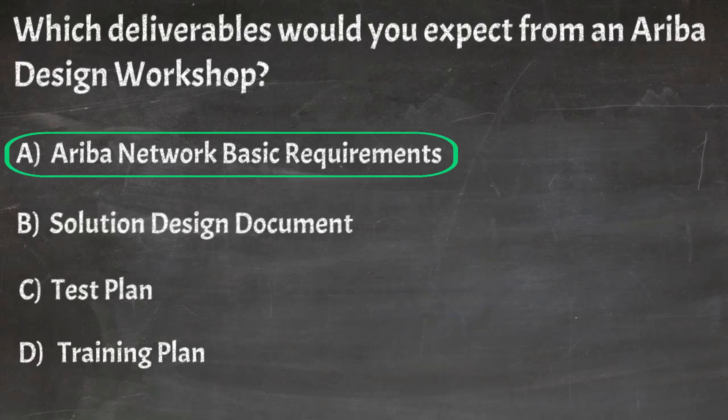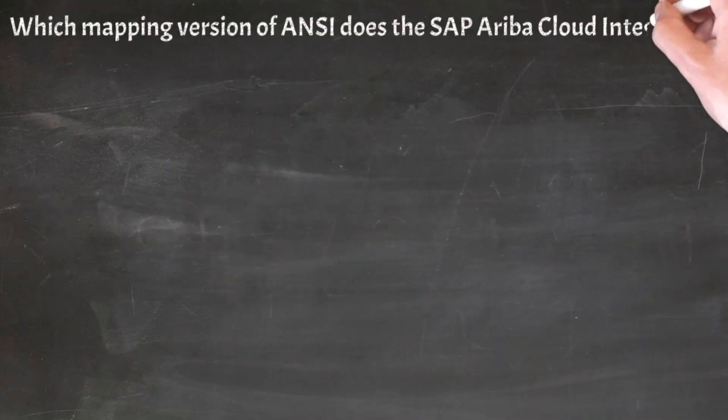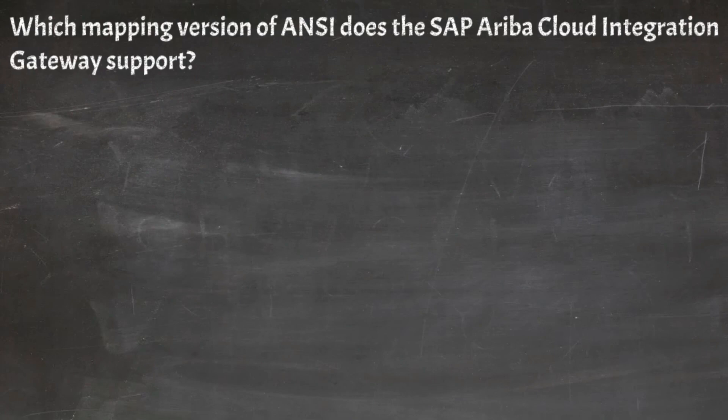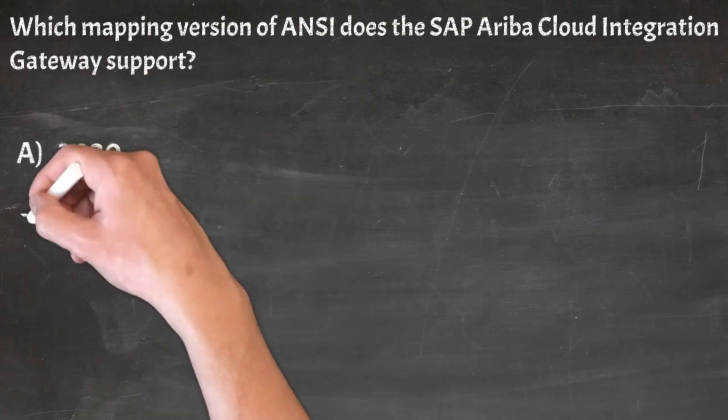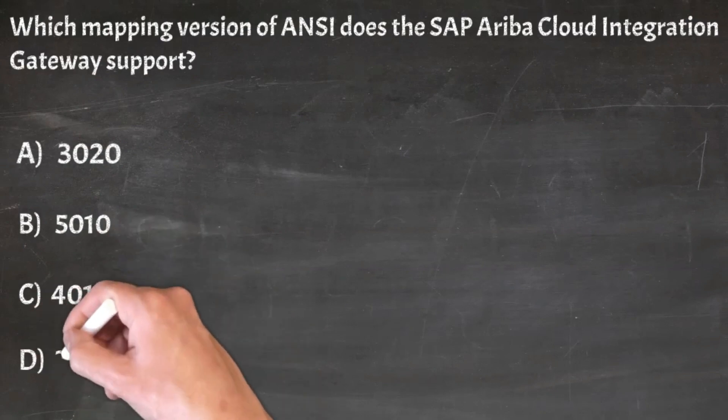Question 12: Which mapping version of ANSI does the SAP Ariba Cloud Integration Gateway support? A. 3020, B. 5010, C. 4010, D. 3010.